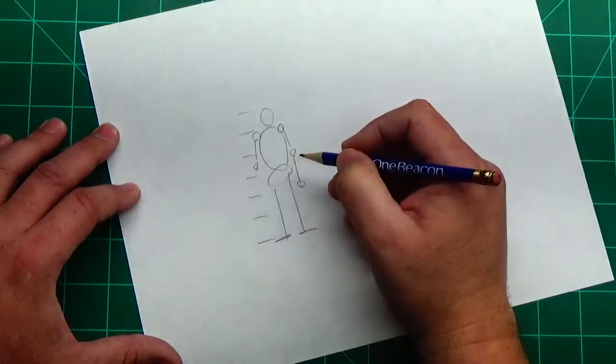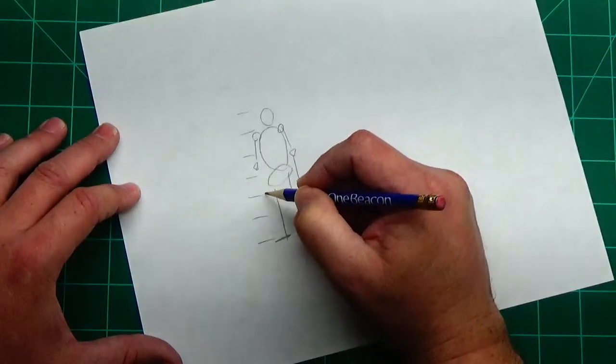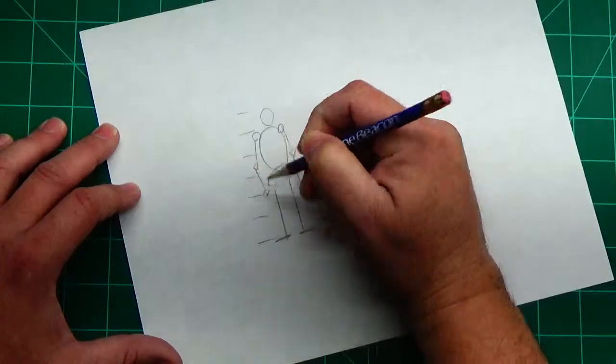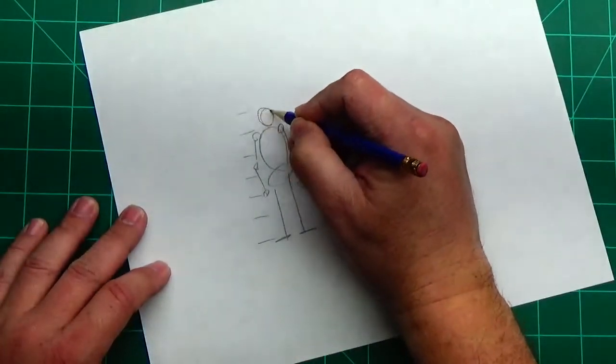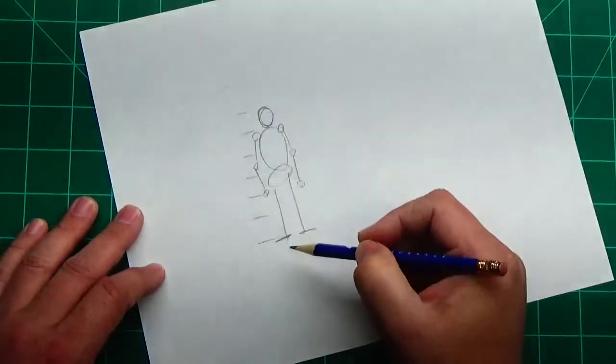So hands come down to where your pockets would be on your shirt. So there's your measurements for the person that you're drawing. It's going to be six heads.